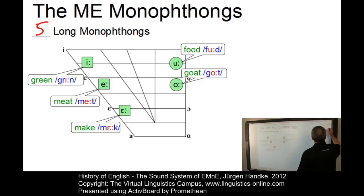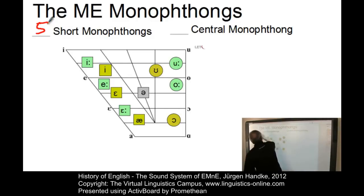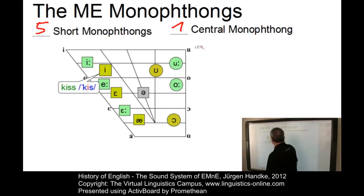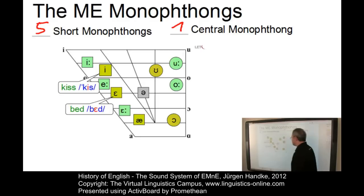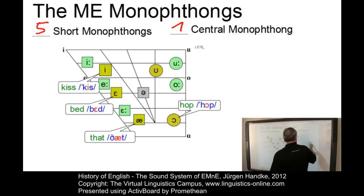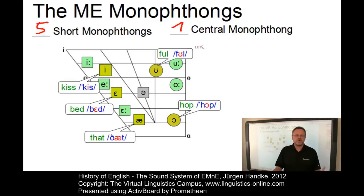The system of short monophthongs includes 5 short monophthongs and 1 central monophthong: a mid-high front vowel /ɪ/ as in 'kiss', a mid-front vowel /e/ as in 'bed', a low front vowel /æ/ as in 'that', a low back vowel /ɒ/ as in 'harp', a mid-high back vowel /ʊ/ as in 'full', and the central vowel schwa occurring in unstressed position. The whole monophthongal system was no longer a congruent pattern, so further sound changes were likely to occur after the transitional state of Early Modern English.